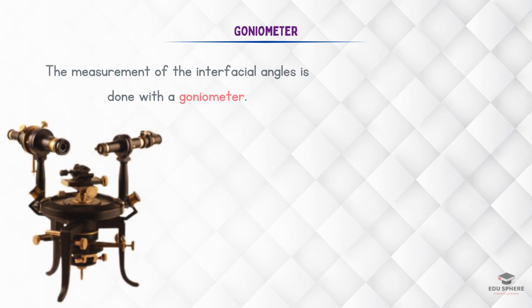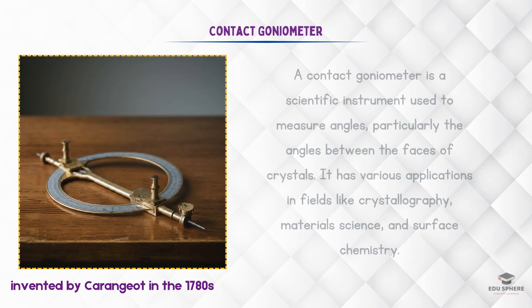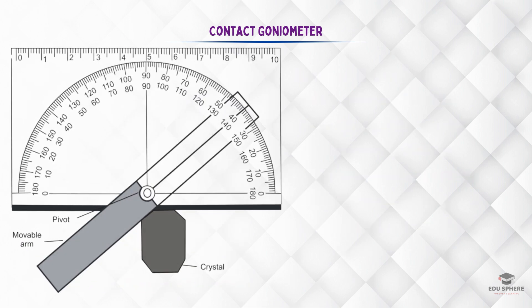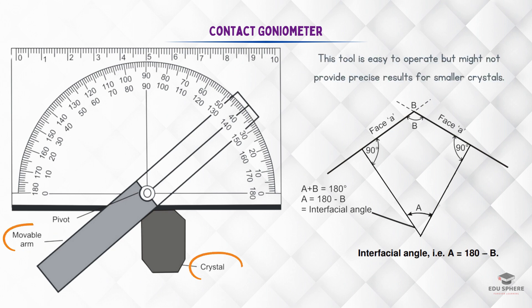These interfacial angles are measured using a goniometer. There are two main types of goniometers. The first is the contact goniometer, invented by Karinjot in the 1780s. It has a graduated arc similar to a protractor and one movable arm. The arm and base of the arc are positioned in close contact with the crystal face, and the reading is taken directly. As shown in the figure, A is the vertically opposite angle, which is the interfacial angle. Because it's complementary to angle B, the interfacial angle can be directly read on the arc of the goniometer. This instrument is simple to use, but may not be as accurate for smaller crystals.